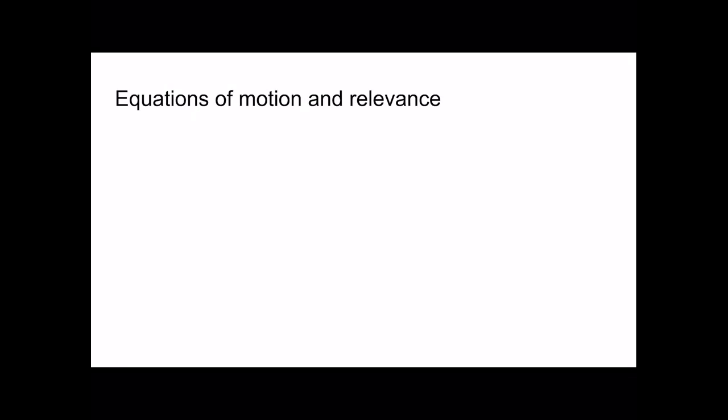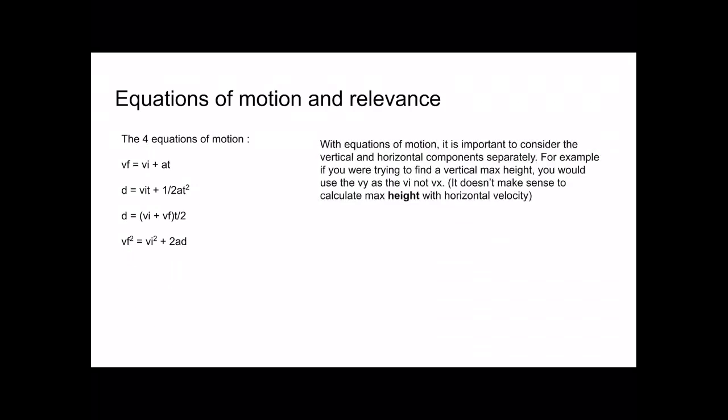Now we have our equations of motion and their relevance to projectile motion. The four equations of motion include: final velocity = initial velocity + acceleration × time, and others you should have covered in class. With the equations of motion in projectile motion, it is important to consider the vertical and horizontal components separately.